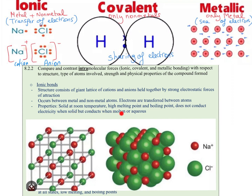Ionic compounds have high melting and boiling points because of the strong forces of attraction between their cations and anions. They do not conduct electricity when solid — they only conduct electricity when in the molten state, meaning in the liquid state, or when aqueous, meaning dissolved in water.